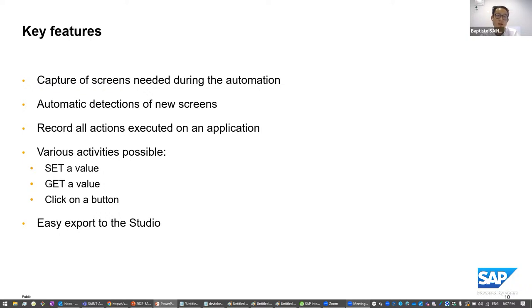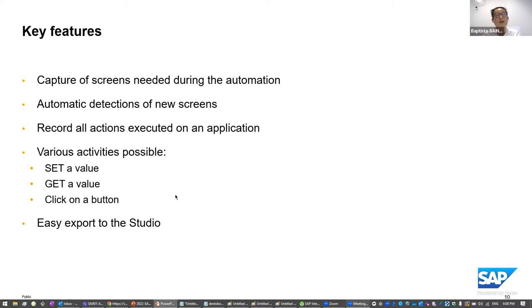Some key features about this recorder: the capture of screens needed during execution can be automatic. As soon as you change the screen within your application, the recorder is able to detect and store them inside your project. If you already used automation artifacts and application artifacts, you know you need to capture screens one by one — with the recorder, all these actions are done automatically. The recorder can record various activities: set a value, retrieve a value, click on buttons. All these actions are then available in your automation, and there is easy export to the studio.